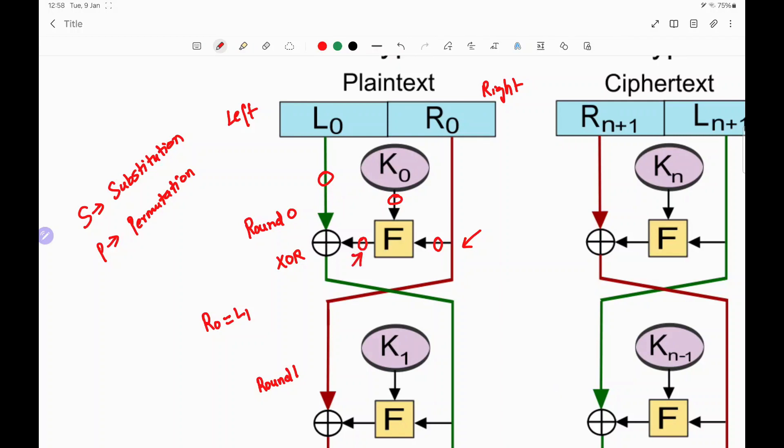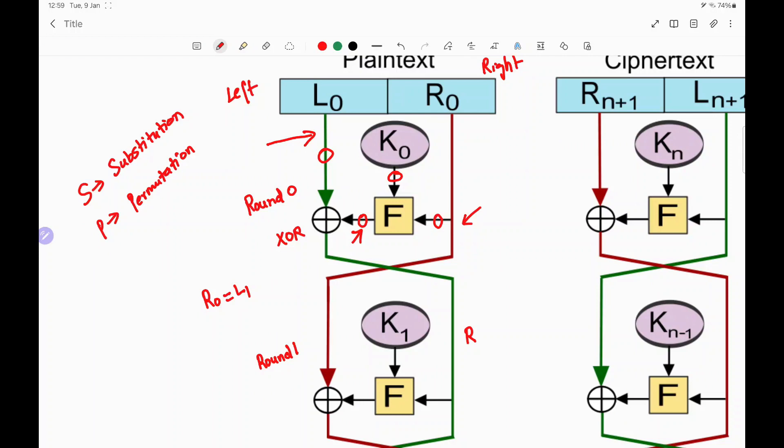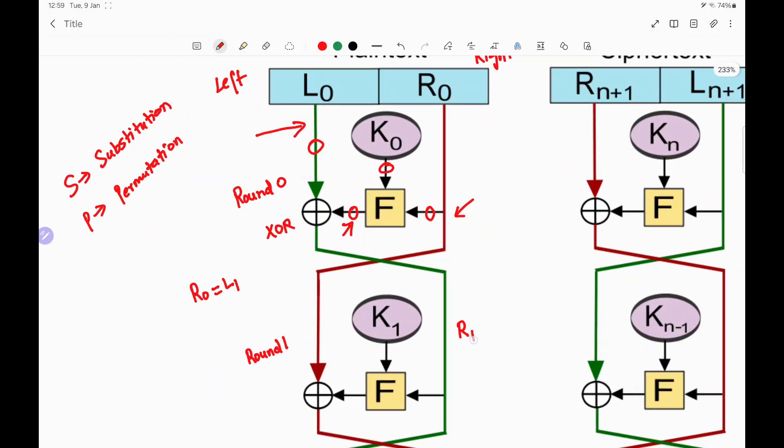And after those, we get some output for that function. That output goes as an input to that XOR operation. So in short, the XOR operation takes two inputs. One is nothing but L0 and the second input is nothing but the output of that function. And whatever is the output of that XOR operation, that becomes the right one that is R1 for the next round.